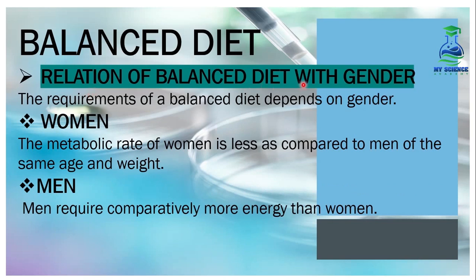Next, let's look at the relationship of balanced diet with gender. The requirement of a balanced diet depends on gender. The metabolic rate of women is less compared to men of the same age and weight. Men require comparatively more energy than women because men have a higher metabolic rate.